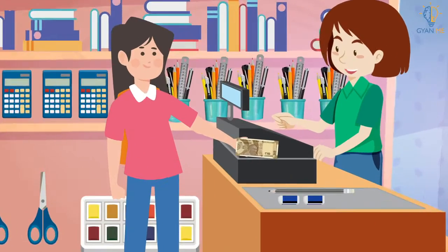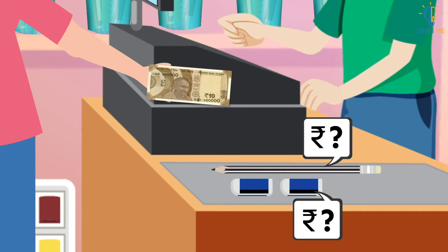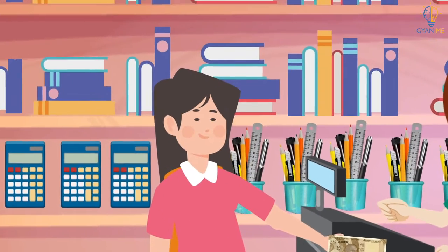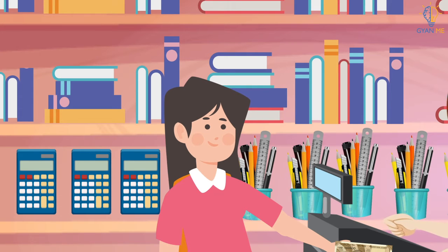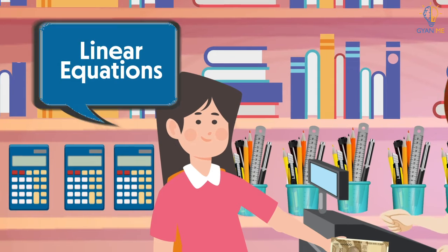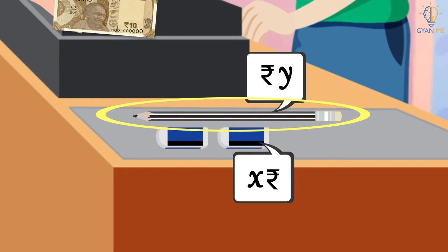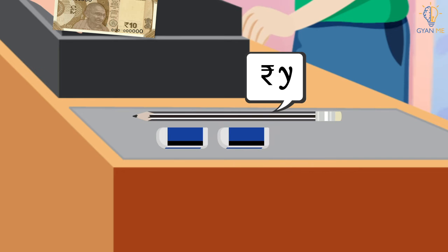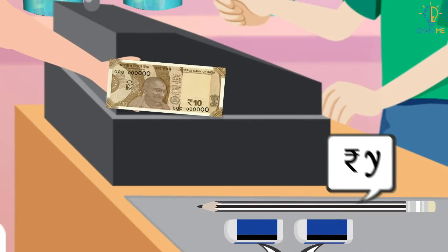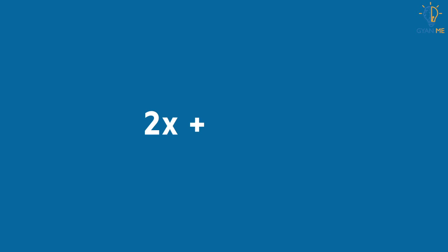For example, Anita bought 2 erasers and 1 pencil for Rs. 10. She does not know the individual cost of each pencil and eraser. She forms an equation from the given conditions, assuming cost of 1 eraser as Rs. X and cost of 1 pencil as Rs. Y. She bought 2 erasers costing 2X and 1 pencil costing Y, with a total cost of 10. Therefore, the equation is 2X plus Y is equal to 10.